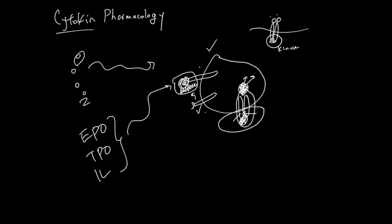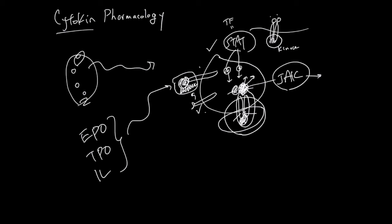When they dimerize, a protein that helps is called JAK. There will be two JAK proteins here activated. And activated JAK activates other proteins called STAT. STAT is a transcription factor. So STAT is going to go to the nucleus and change the gene expression of this cell.